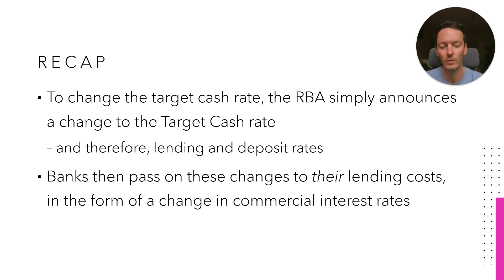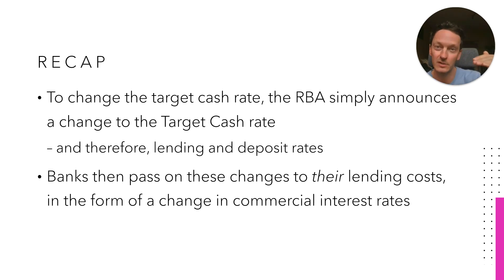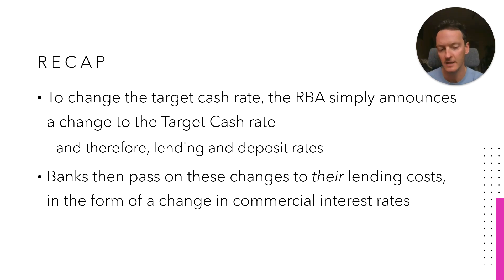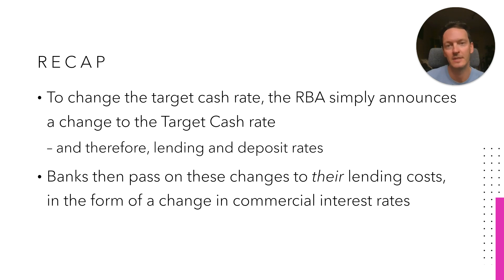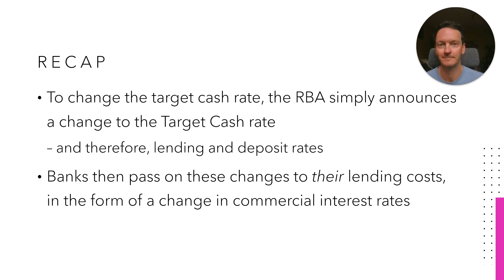Those changes are then passed on in the form of a change in commercial interest rates. So in a scenario where the rate at which banks exchanged was 4% and then went to 3.75%, the price at which banks borrow from each other has fallen. That is then passed on in the form of lower interest rates to their commercial consumers, providing more favorable lending conditions for consumers and businesses — which would be the intent of the Reserve Bank in lowering the target cash rate. Hopefully that helps. Any questions, please see your teacher. Happy learning.